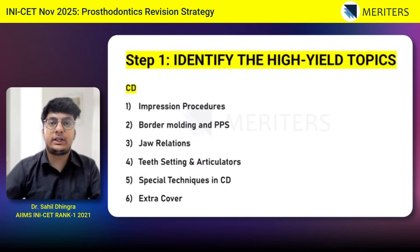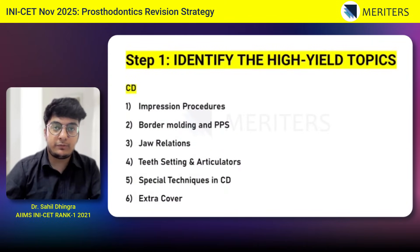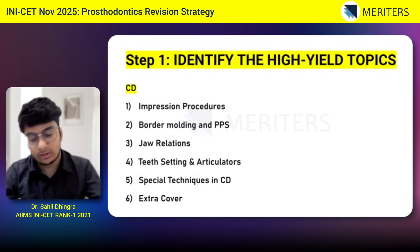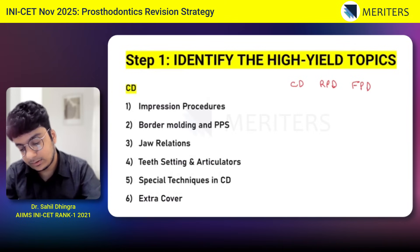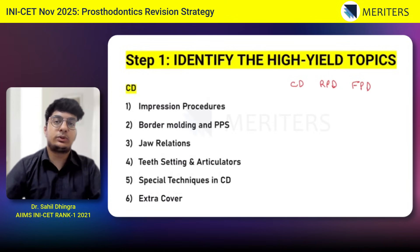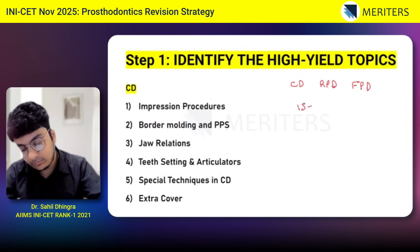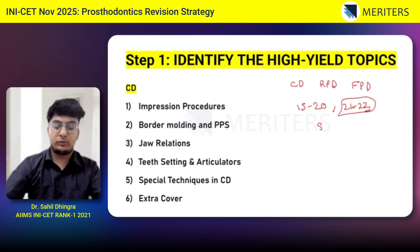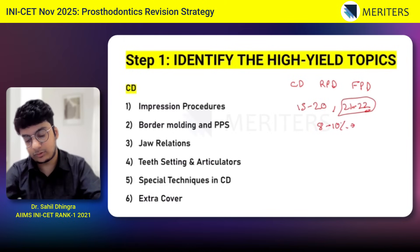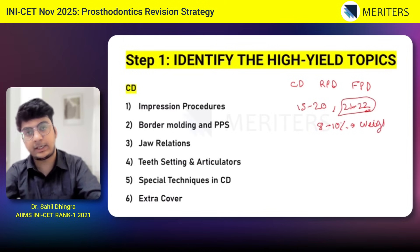Step one is to identify the high yield topics. Before that, let's talk about the weightage of prosthodontics in your INICET. Prosto has three components: CD, RPD, and FPD. In your INICET, the total prosto questions including all three are around 15 to 20, at times around 21 to 22 questions at max. So almost 8 to 10 percent is your prosthodontics weightage in INICET.